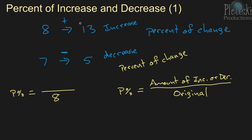Well, how much did it go up? So how do you get from 8 to 13? Well, you have to add something. We have to add 5. So 5 is going to be our amount of increase.